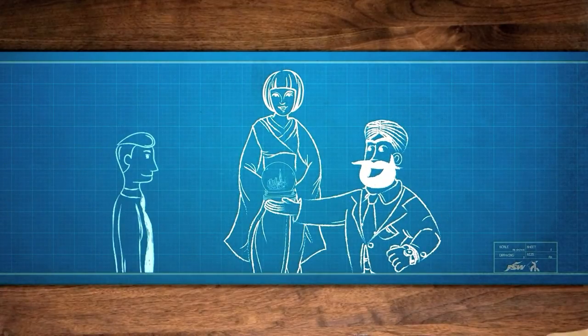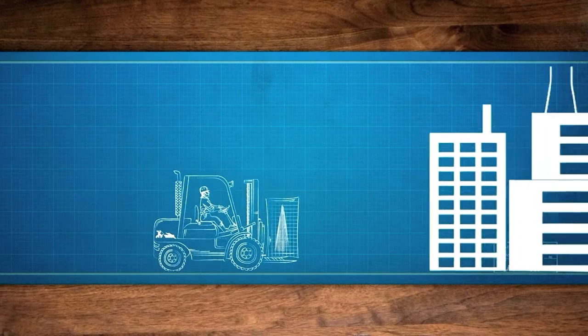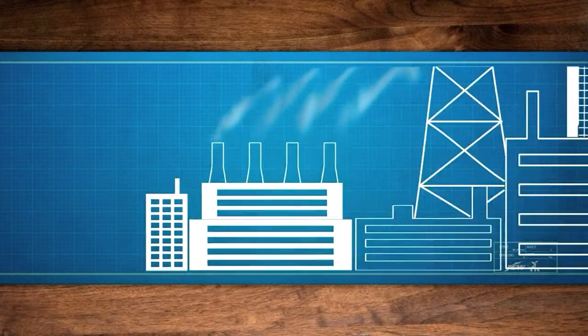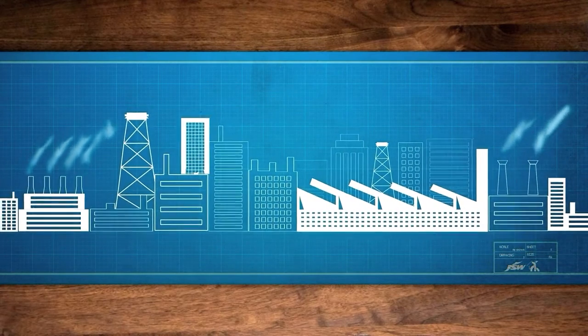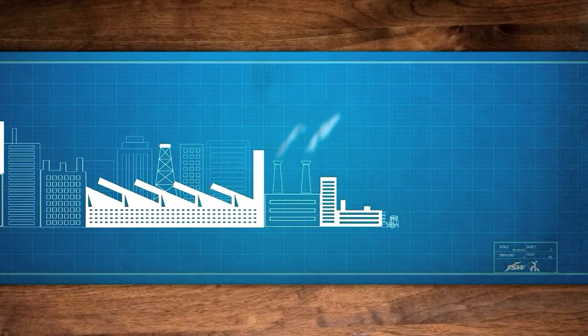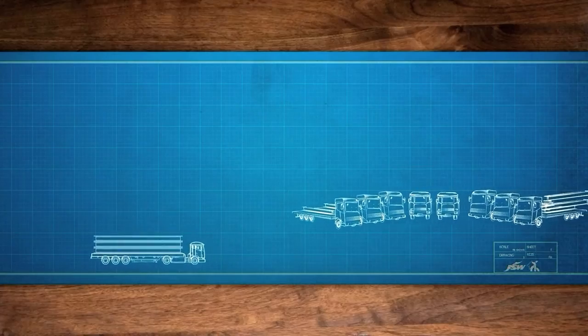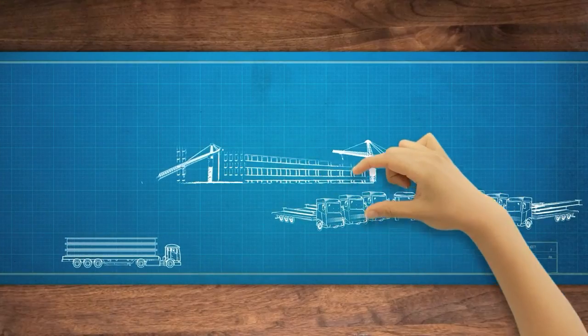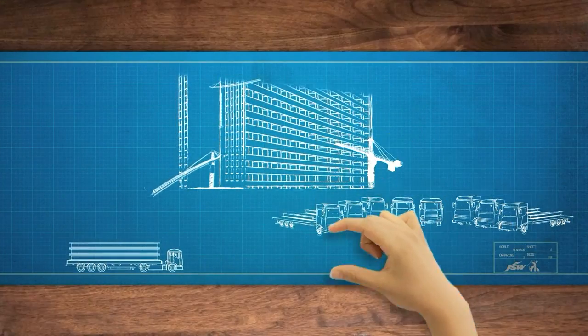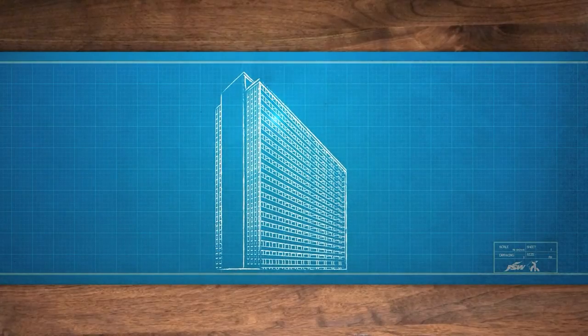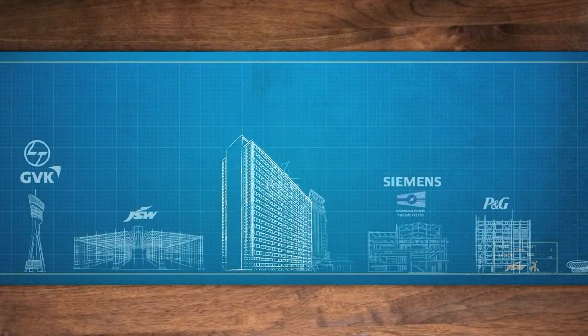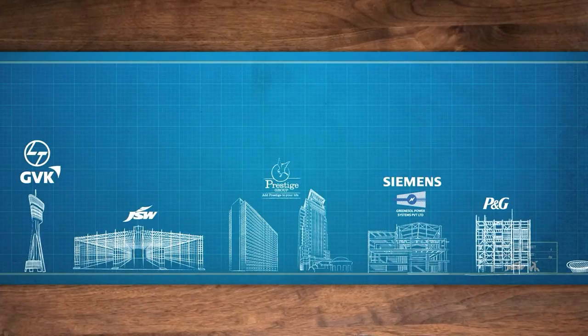At JSSL, we make buildings in our factories. We design, assemble, transport, and construct on-site with speed and precision. Think Lego, just a lot, lot bigger. The Prestige and Prestige Trade Tower, India's largest air traffic control tower, India's largest cold rolling mill.